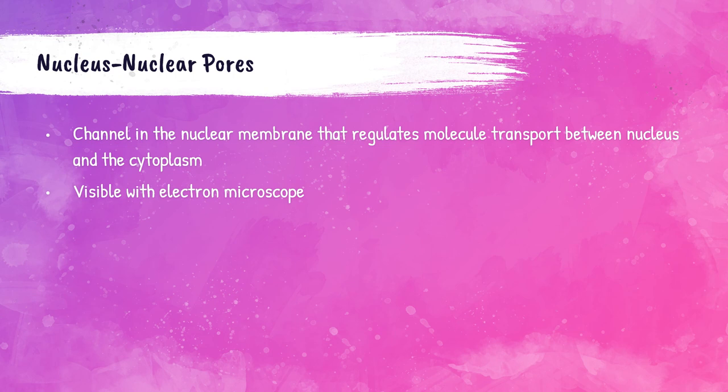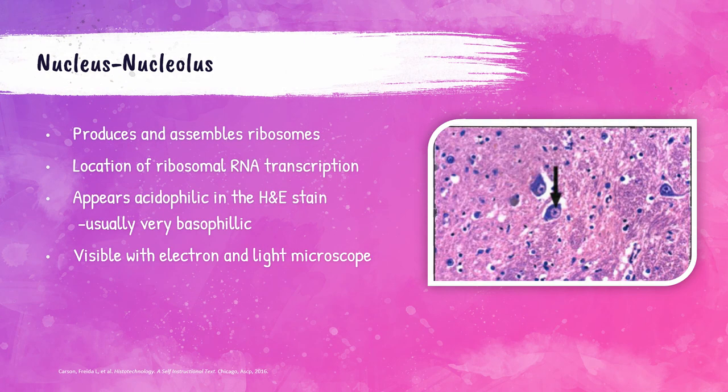The nucleolus is a rounded structure within the nucleus that provides and assembles ribosomes. It is also the location of ribosomal RNA transcription. This is usually a very basophilic structure but can appear acidophilic with the H&E stain. It is visible with both the electron microscope and the light microscope. The photo shown here denotes the nucleolus with a black arrow in a neuron tissue section.